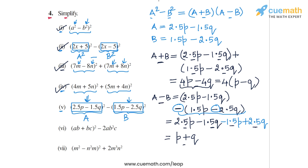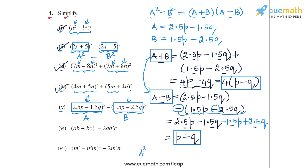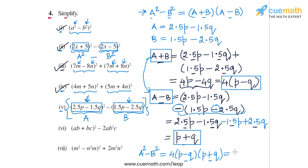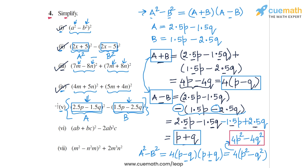So a+b = 4(p - q) and a-b = (p + q). Multiplying them: (a+b)(a-b) = 4(p-q)(p+q). Applying the identity again, (p-q)(p+q) = p² - q², so the result is 4(p² - q²), which can be written as 4p² - 4q².